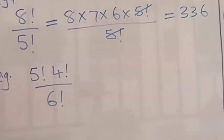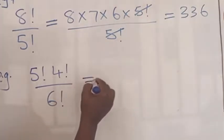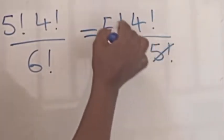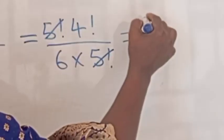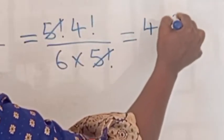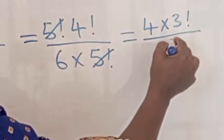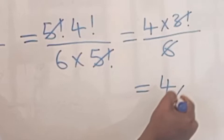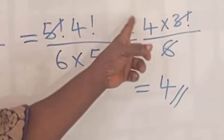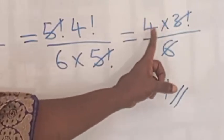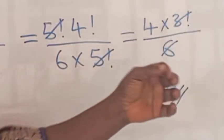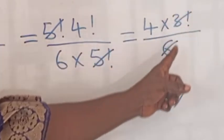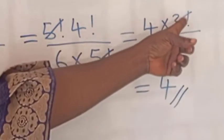Now the problem five factorial times four factorial over six factorial. Six factorial equals six times five factorial, so the five factorials cancel. We have four factorial over six. Now four factorial equals four times three factorial, and three factorial equals three times two times one, which is six. So the three factorial cancels the six, and you are left with four. So five factorial times four factorial over six factorial equals four.